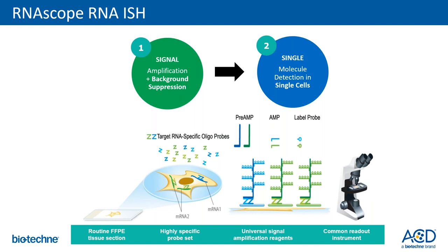The RNAscope technology was developed and first launched in 2010 to address these issues with conventional RNA in situ hybridization. The technology has been optimized to work on routine FFPE tissues, which is the tissue of choice for anatomic pathology labs as well as researchers. It utilizes a so-called double Z probe design, enabling both signal amplification and concurrent background suppression — allowing detection down to single messenger RNA molecules at single-cell resolution under a standard light microscope, with fluorescent readouts also possible.